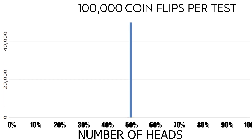With two hundred thousand coin flips, it looks like every single one averages out to exactly 50%. Our bell curve is just one vertical line at this point. So you're basically never going to flip a coin 200,000 times and not get 50% heads and 50% tails.